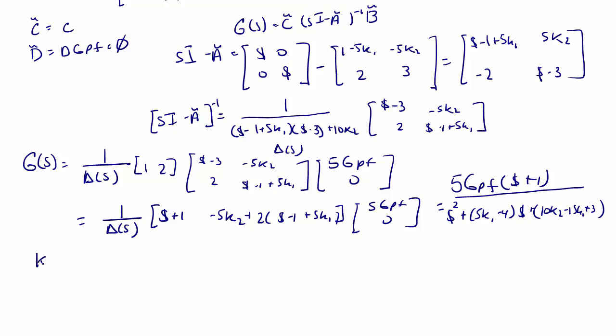Note here that when K1 equals K2 equals 0 and GPF equals 1, we get back the original transfer function for the state equation, which was 5 times (S plus 1) over (S minus 1) times (S minus 3).